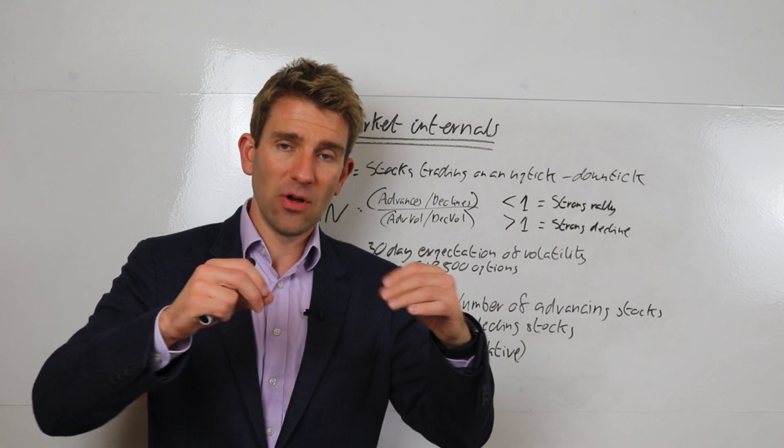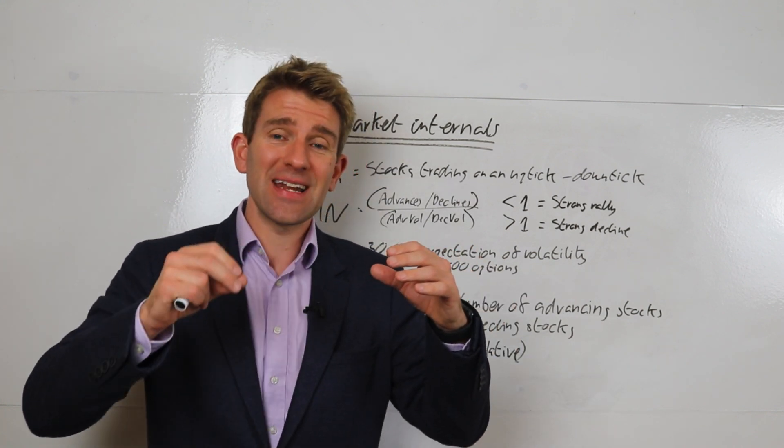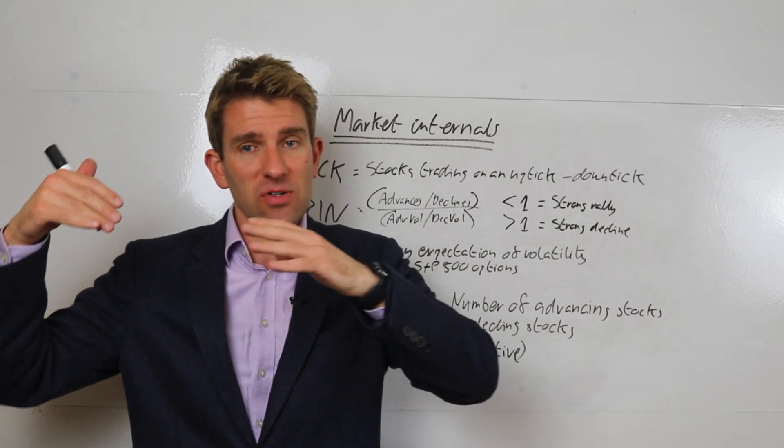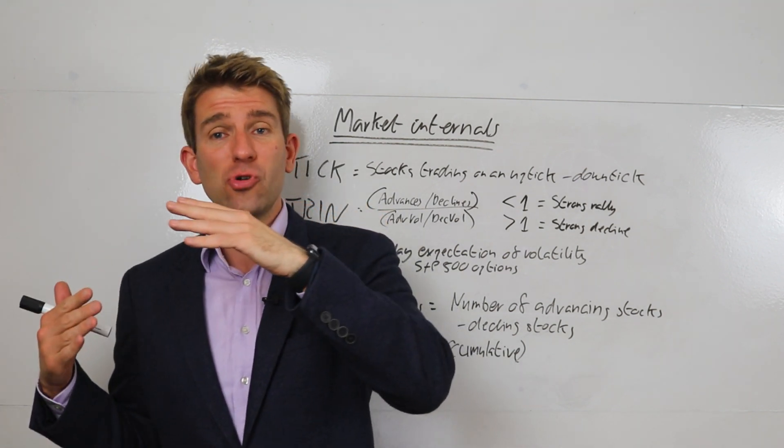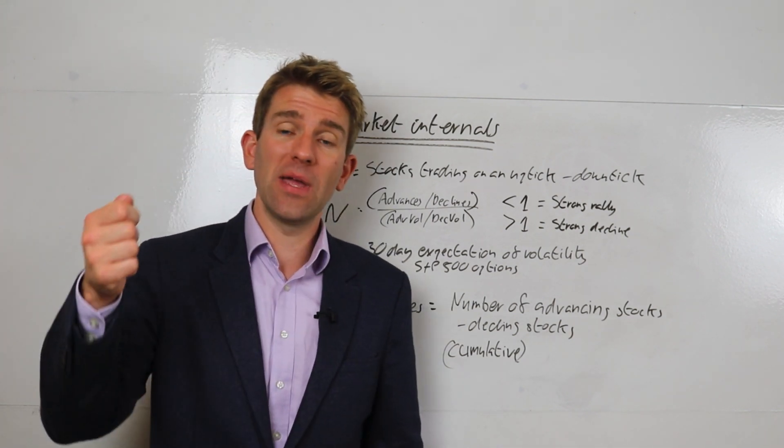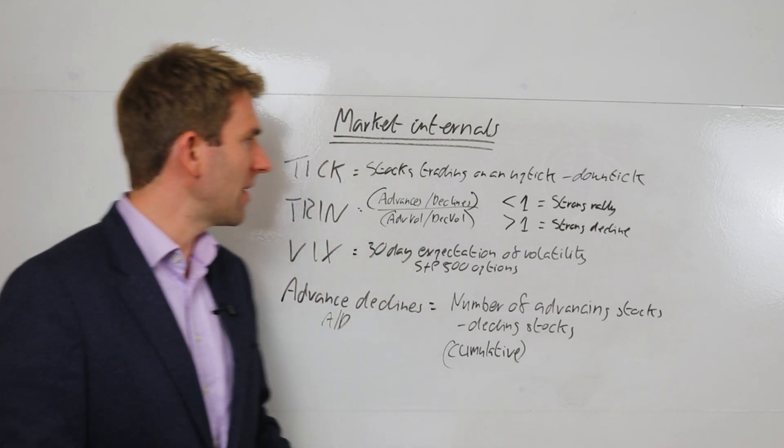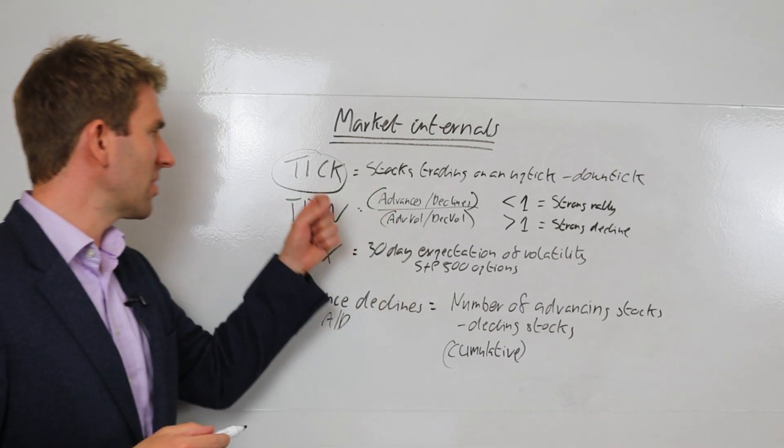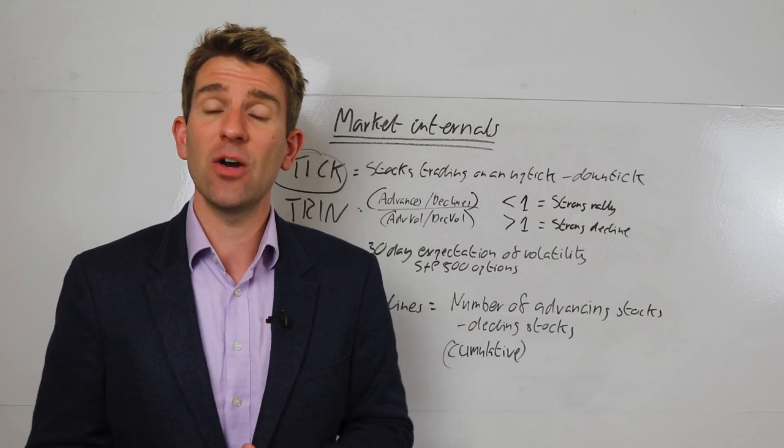If the price is stagnating but advance-declines are increasing, then there might be some pressure for the actual price or index to push up. If maybe advance-declines are declining as price is pushing up, that might be a warning sign that actually it's only a few components of the index that are propping it up, and if they start to back off, the whole thing could crumble. Again, we'll go into some depth on that. But anyway, guys, those are the four. TICK is my very favorite - I like that a lot. Look out for that video, but also look out for TICK, TRIN, VIX, advance-declines. Hopefully it's been useful to you, guys. Take care, whatever you're doing. Bye-bye.